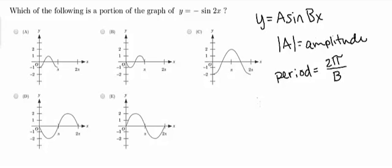So in this case, the amplitude is still going to be the absolute value of A, and A is actually minus 1, so the amplitude is still going to be 1.